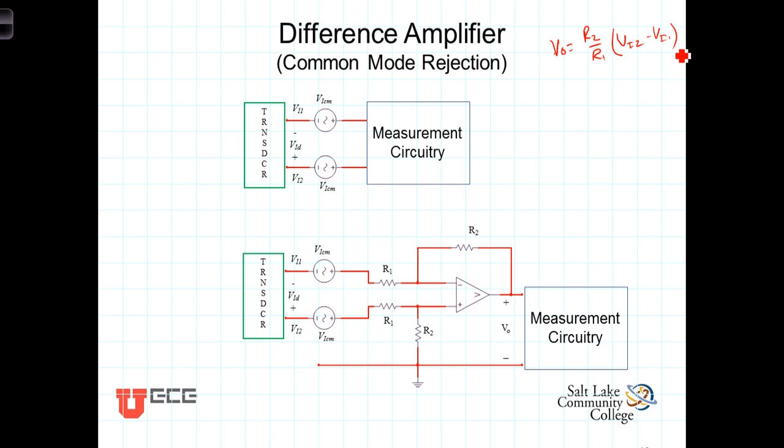We define the differential gain or A sub D to equal the ratio of Vout over Vn2 minus Vn1, which is equal to R2 over R1.